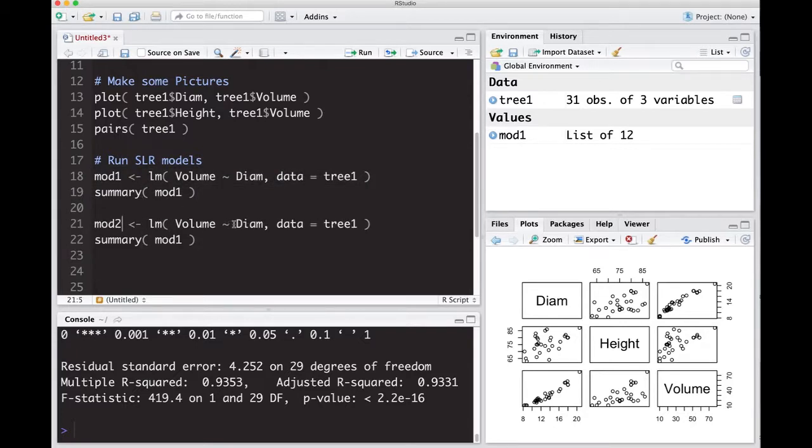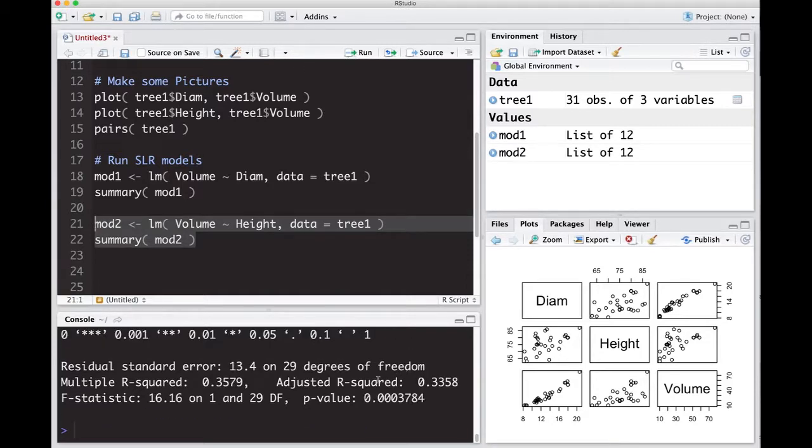Let's copy and paste this and I'm just going to swap out diameter with height. Hopefully I can spell it right. Then I'm going to switch this to mod2 and let's run this one and see what we get for an R-squared. The adjusted R-squared is 0.3358, so not nearly as good as using diameter.